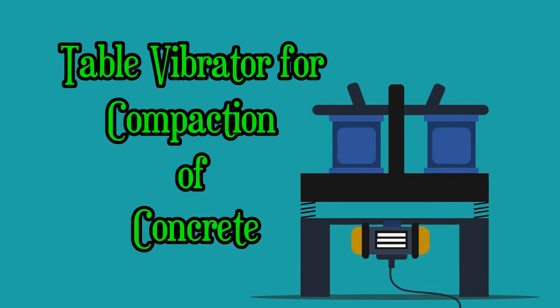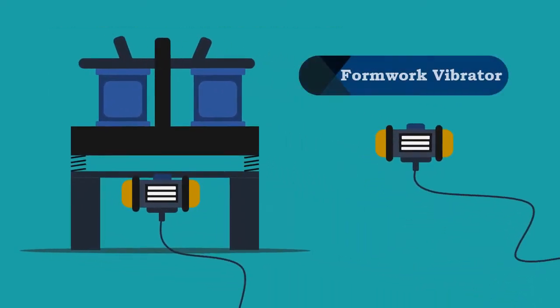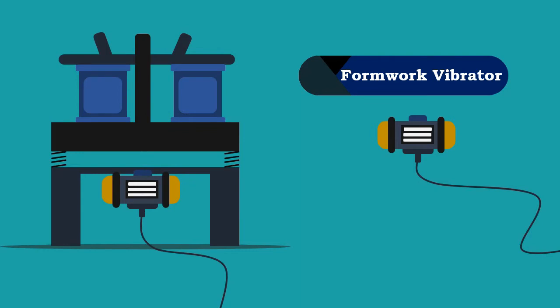Table Vibrator for Compaction of Concrete. Table vibrator for compaction of concrete is a special case of formwork vibrator where the vibrator is clamped to the table.